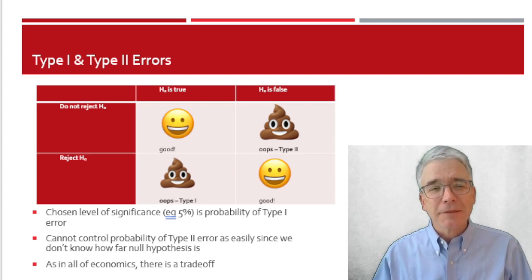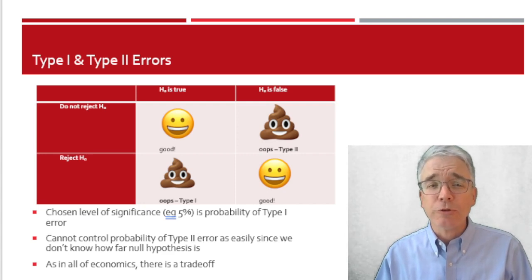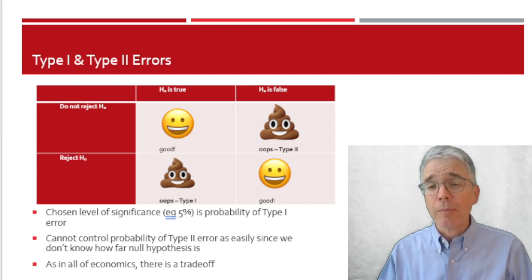But alright, since there are inevitably randomness in the outcome of a hypothesis test, this little table here might help. There are two possibilities in the row. Either we reject the null hypothesis or we do not reject the null hypothesis. Then the vertical columns, we have two possibilities. Either the null hypothesis is true or the null hypothesis is false.